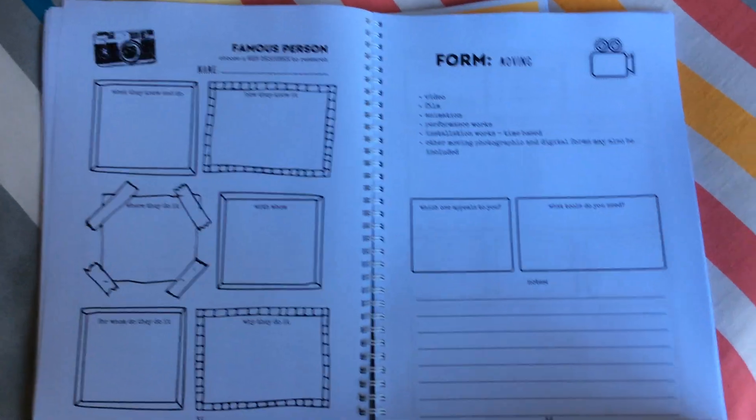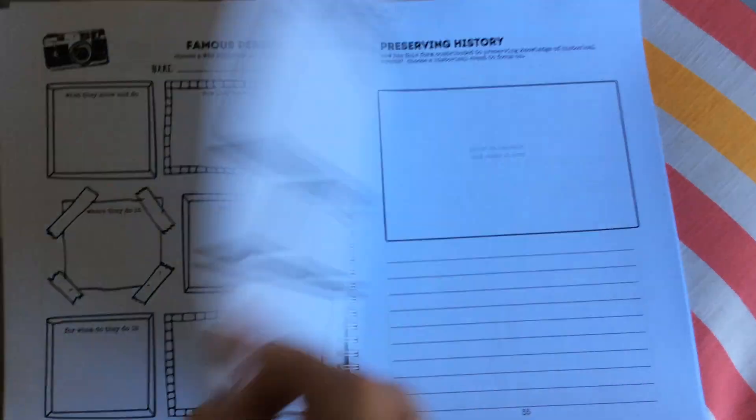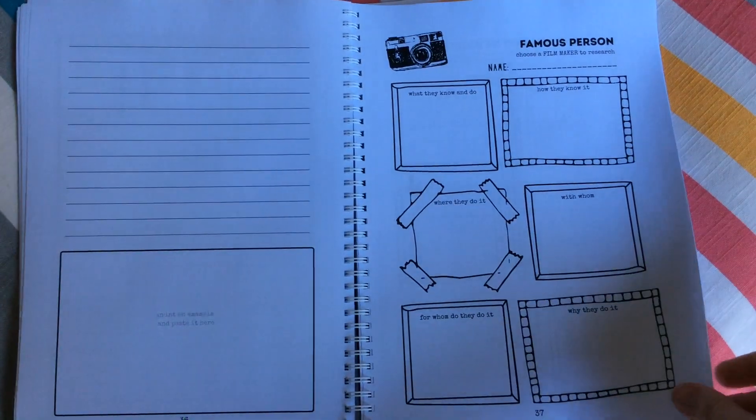And then the interactive forms of web design and computer games and so on, how that has been used to preserve history. Some inventions that were linked to that. Moving, so this is for the film producers. How that has been used for preserving history.